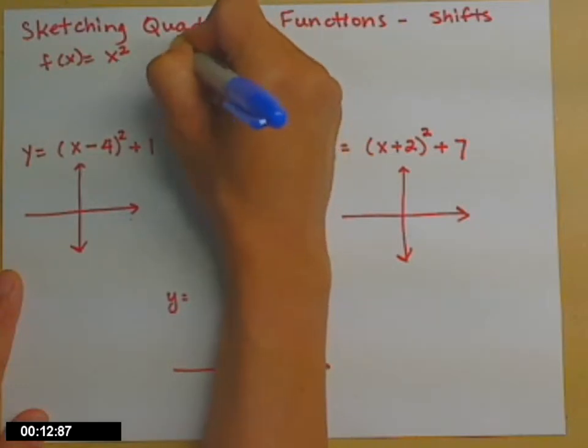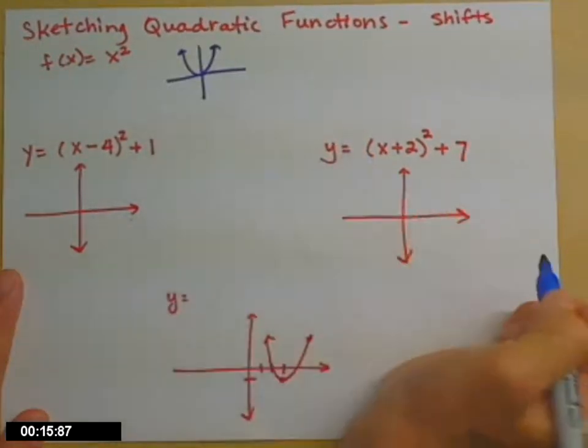Remember the graph of that is a parabola, looks like a U. The vertex is the point at the bottom.